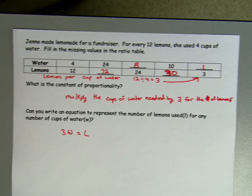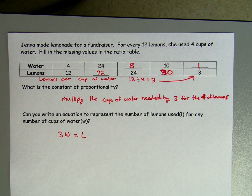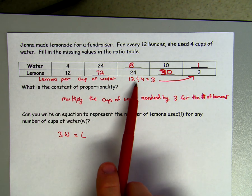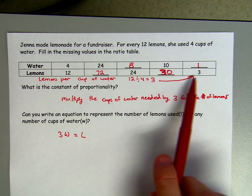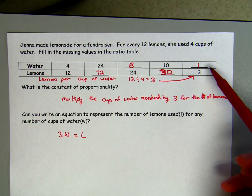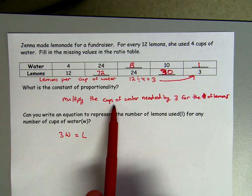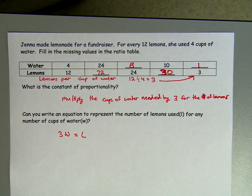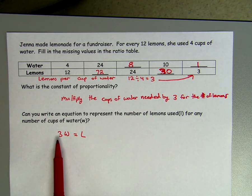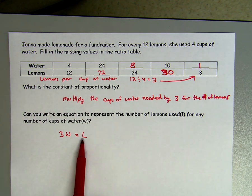The last example is water needed per lemons to make lemonade. Every 12 lemons uses 4 cups of water. I did 12 lemons divided by 4, giving a constant of 3 lemons per cup of water. My constant of proportionality is multiply the cups of water by 3 to get the number of lemons. The equation is 3 times the cups of water equals the total number of lemons.